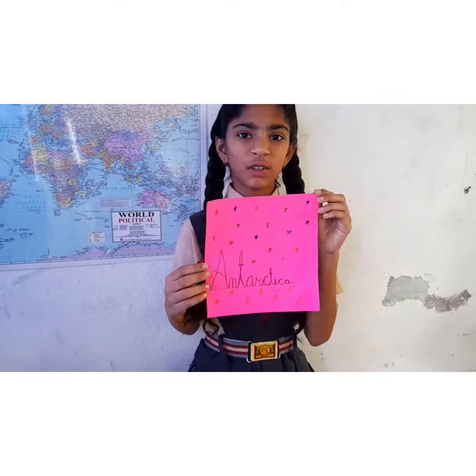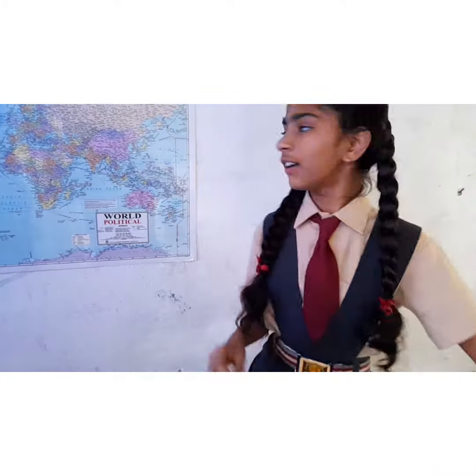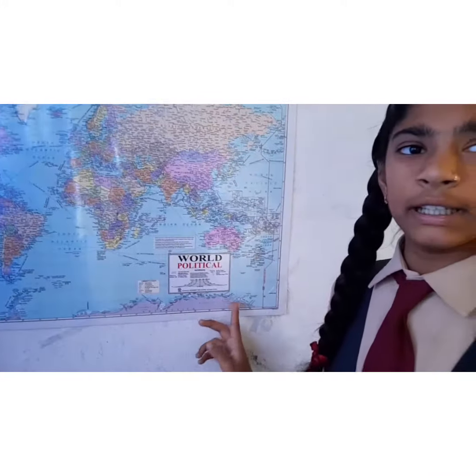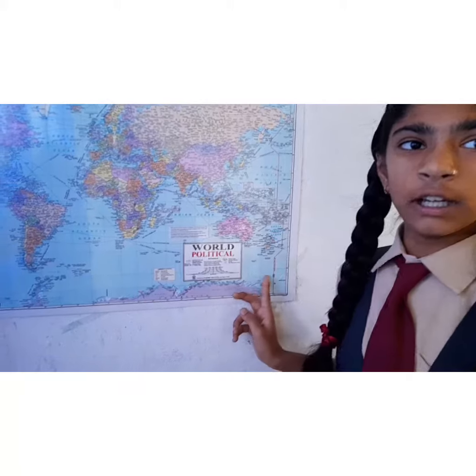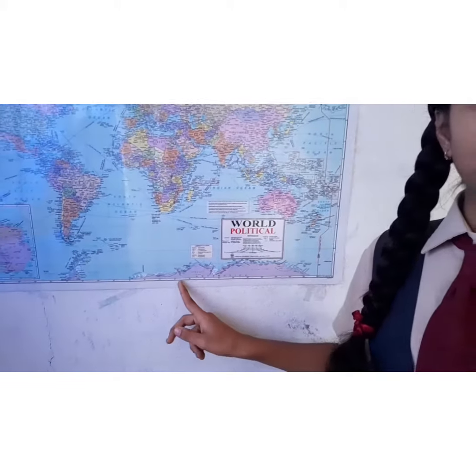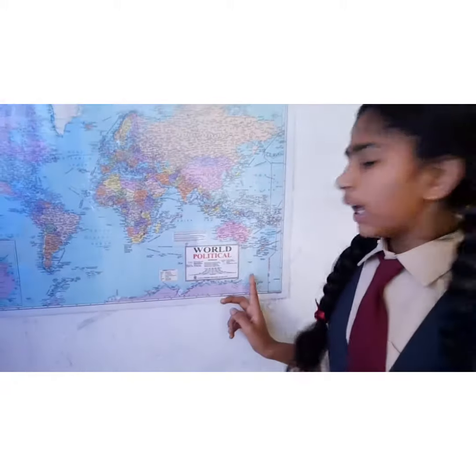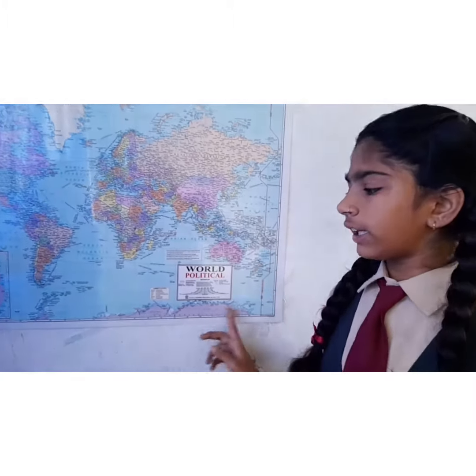Next is Antarctica. Antarctica lies completely in the southern hemisphere. It is a huge continent. The South Pole lies almost at the center of this continent. It is located in the south polar region and is covered in thick ice.